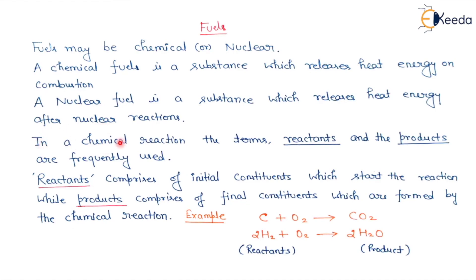In a chemical reaction, the terms reactant and product are frequently used. Reactants comprise the initial constituents which start the reaction, while products comprise the final constituents formed by the chemical reaction. For example, if carbon is present in a fuel, then carbon is the reactant. In the presence of oxygen, combustion of carbon takes place: C + O2 → CO2. CO2 is the product. So in a chemical reaction, we have reactants and products.